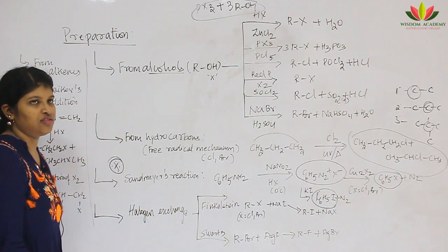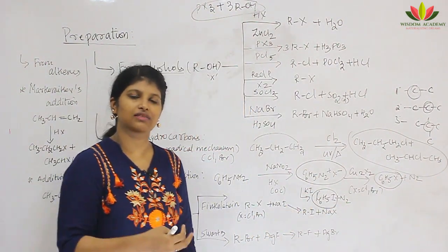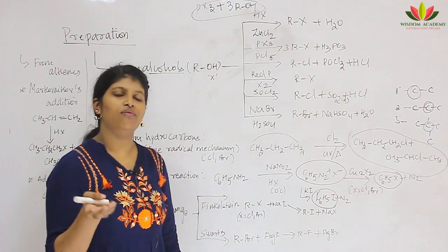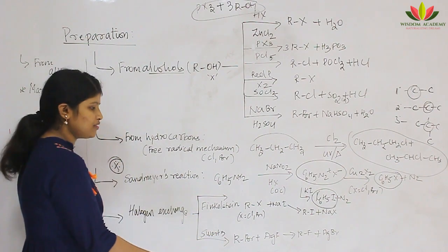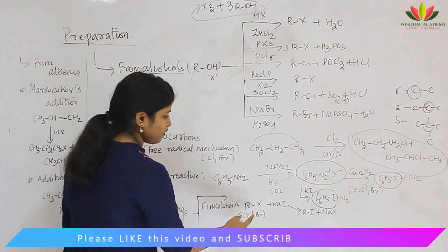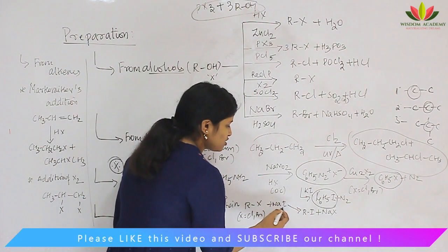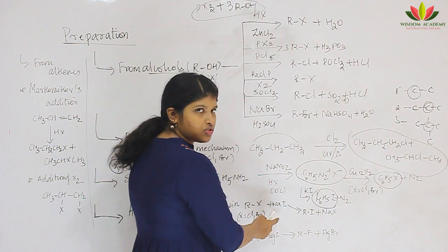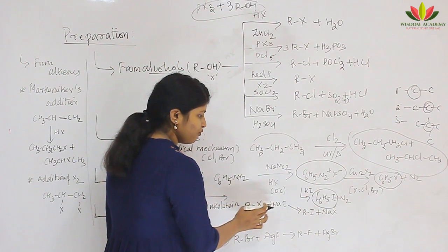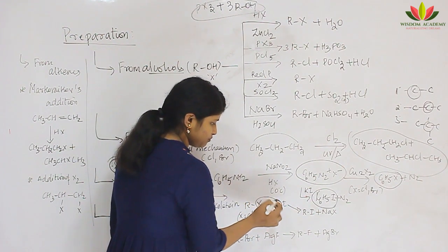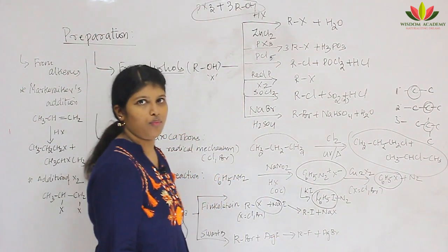The fourth method is halogen exchange. Since Sandmeyer reaction gives mainly chloro and bromo compounds, if we need a fluorine or iodine compound we use halogen exchange. There are two types: Finkelstein and Swartz. In Finkelstein, we take a chloro or bromo compound and treat it with a strong iodide salt like sodium iodide. The halogen on the R group is displaced by sodium and iodine attaches to the R group, giving an iodo compound.